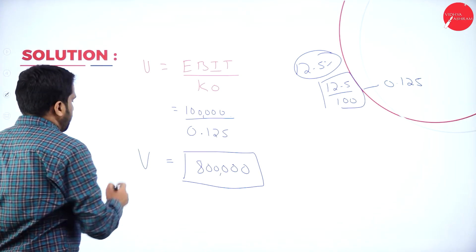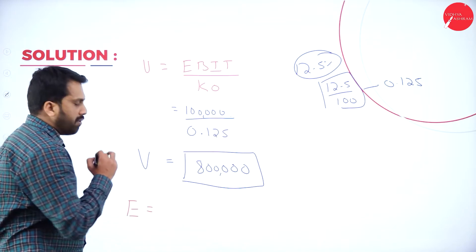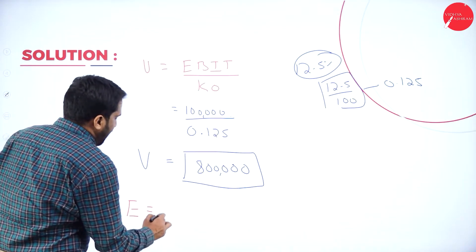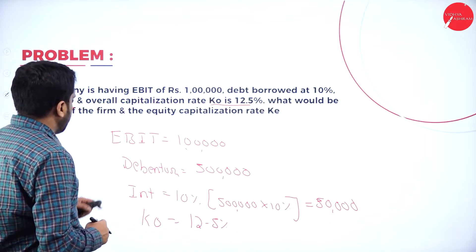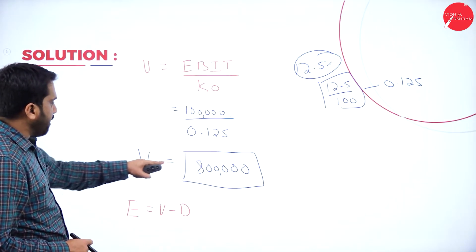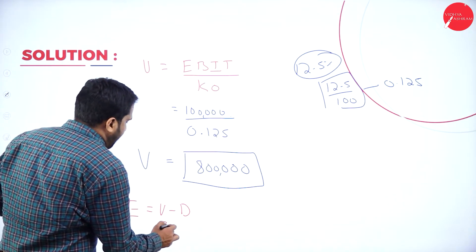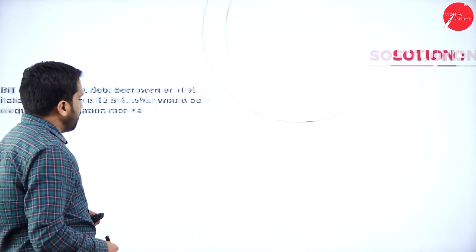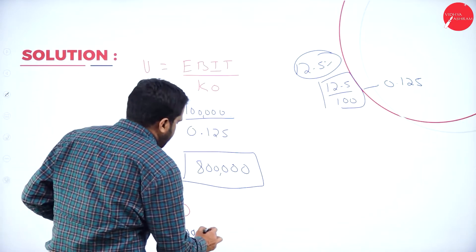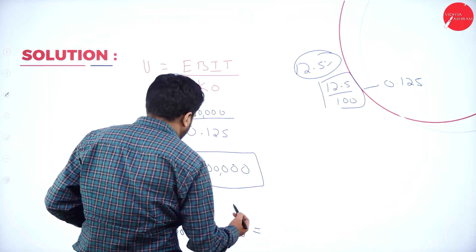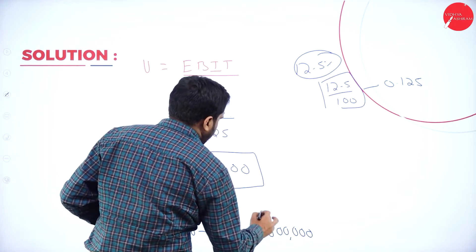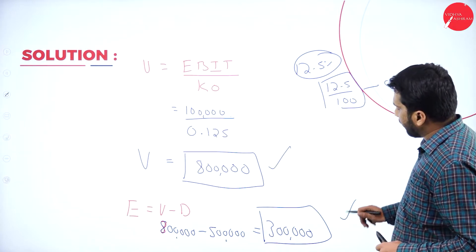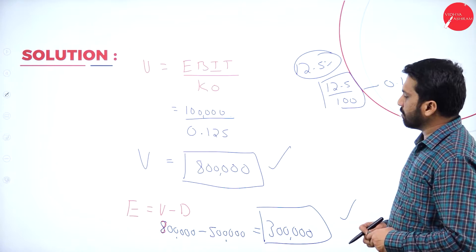Now we go for the second step: equity. The formula is value minus debenture equals equity. The value we already calculated is eight lakh, minus the debenture value of five lakh. The answer is three lakh. So the equity value is three lakh.